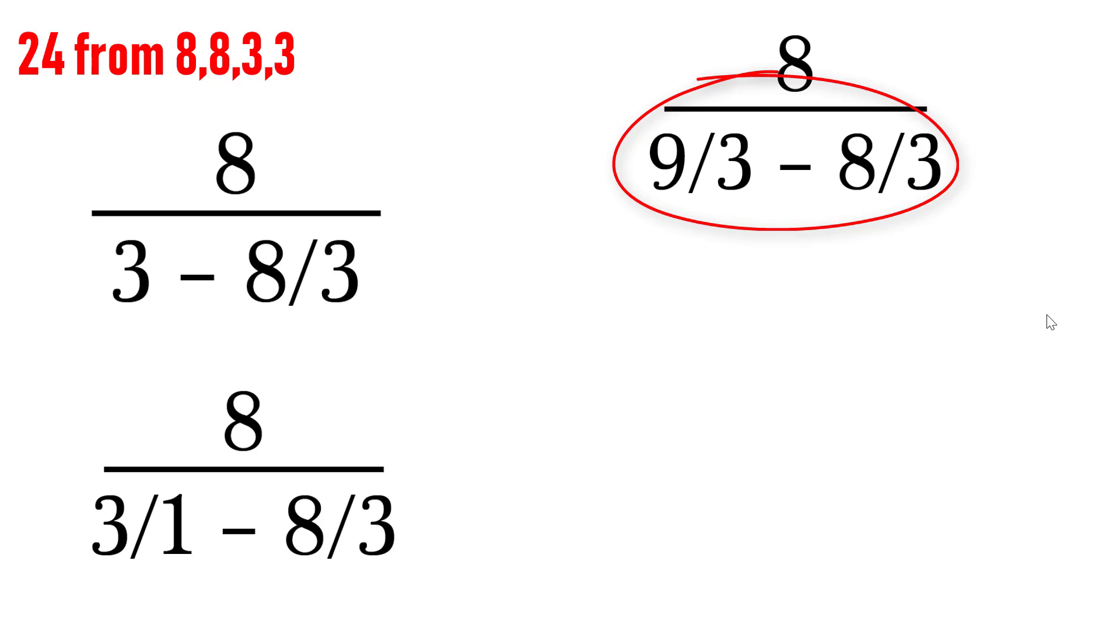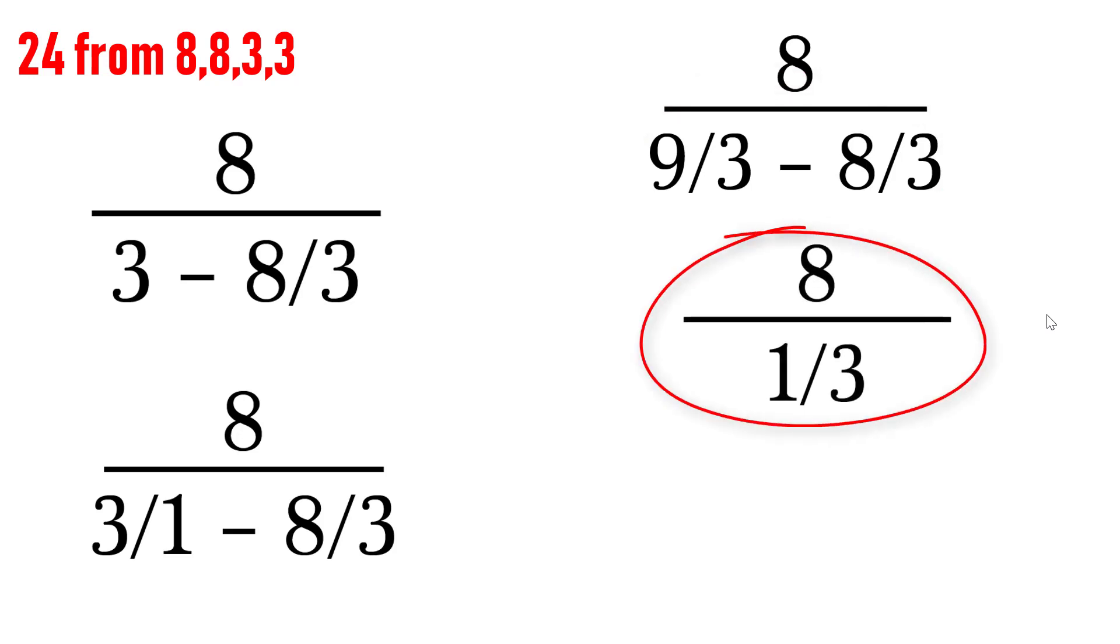So, now the equation is 8 divided by 9/3 minus 8/3. Now, we can subtract the two fractions since the denominator is same. So, this will yield 8 divided by 1/3. This is what we are trying to obtain.